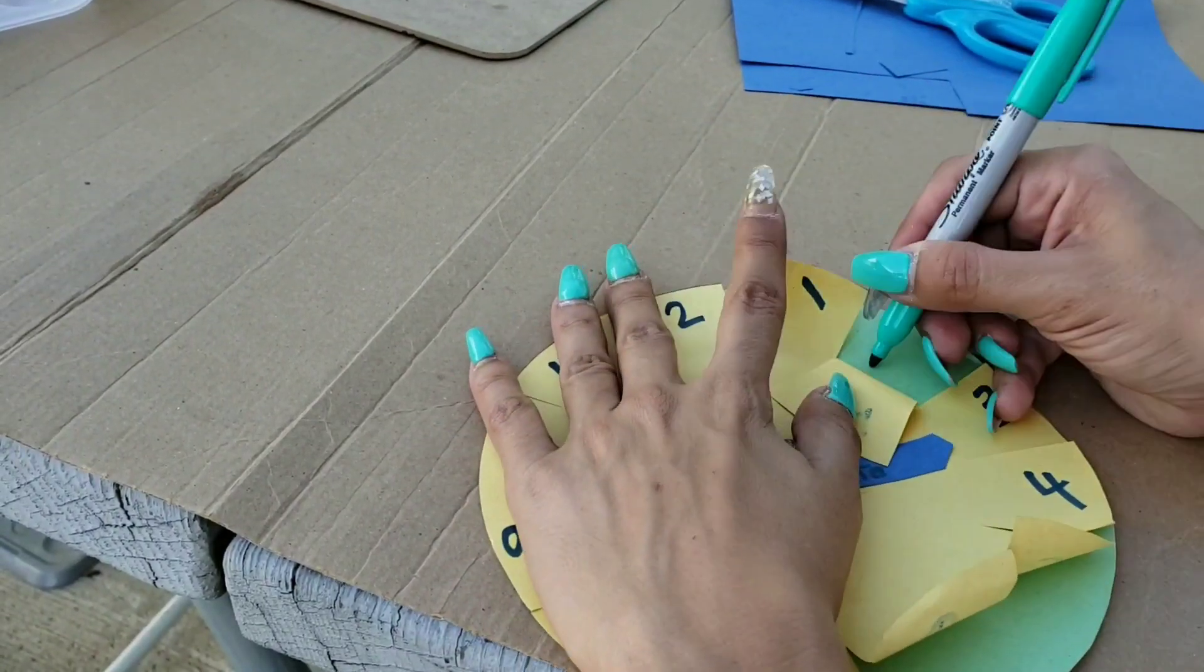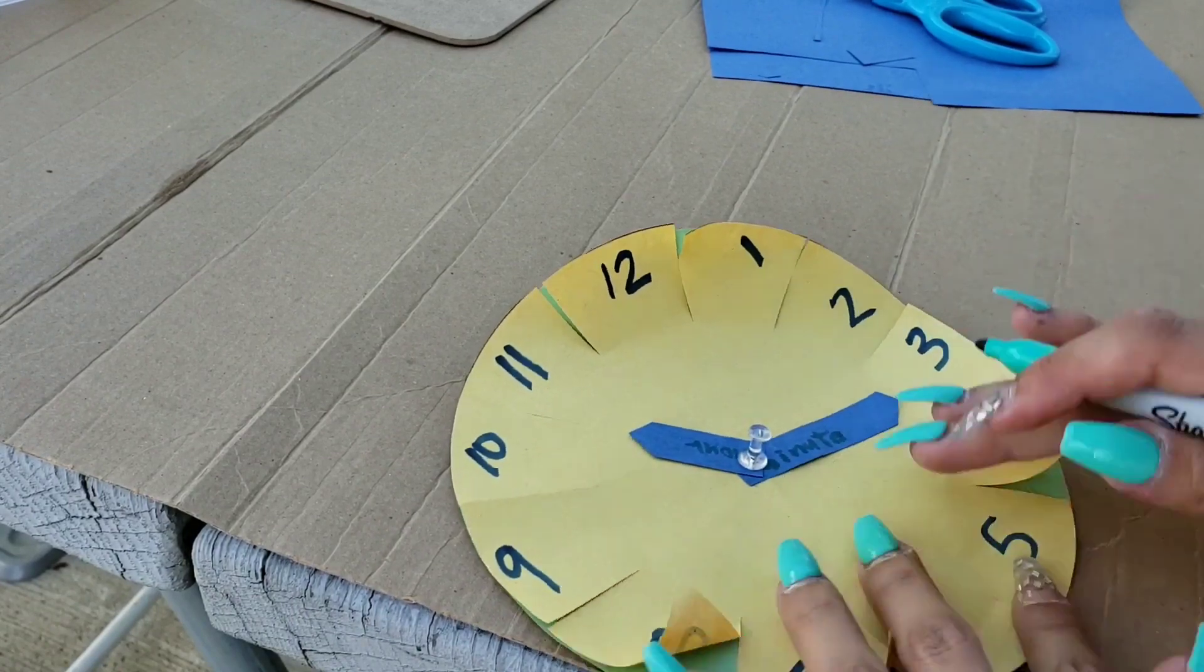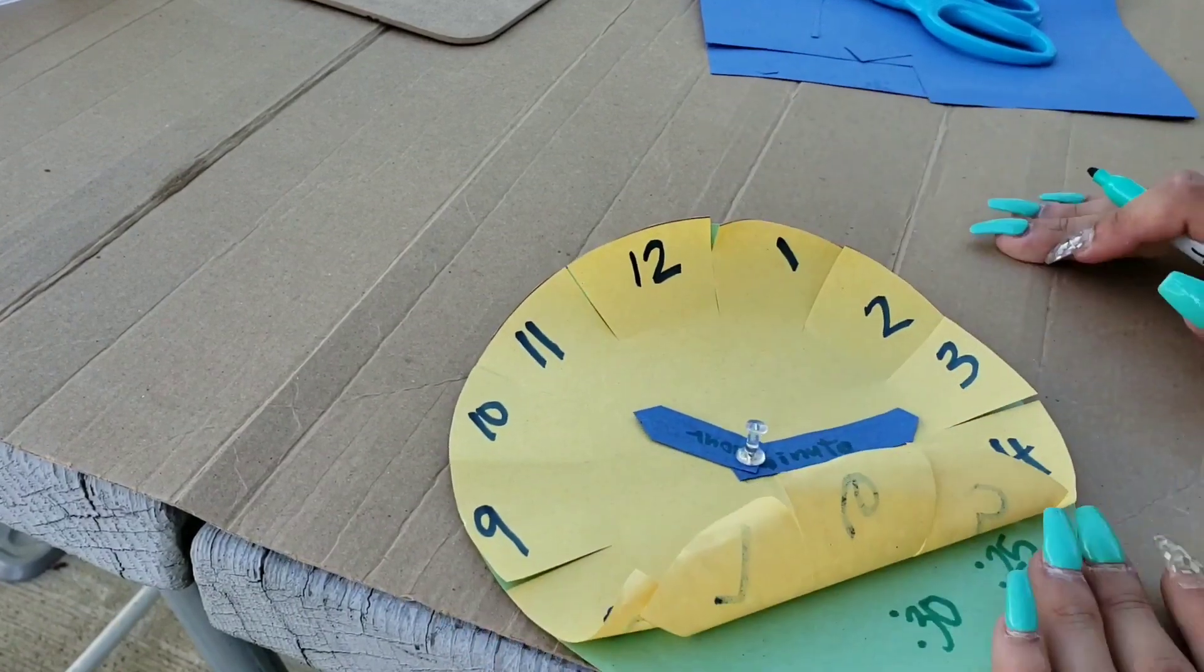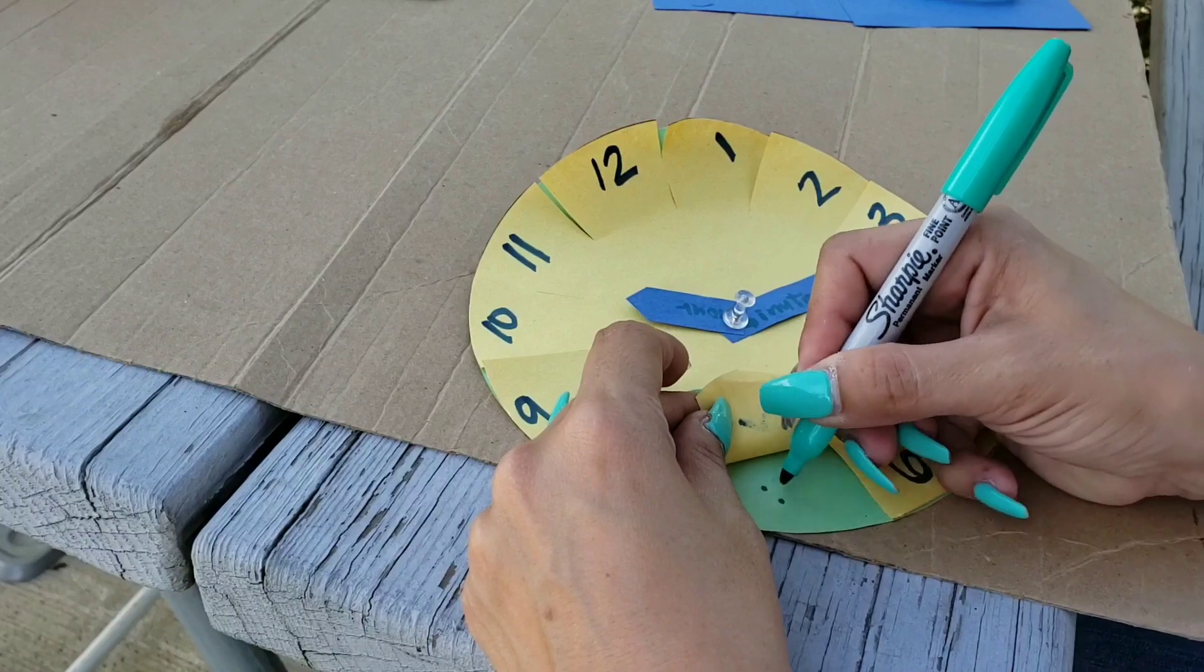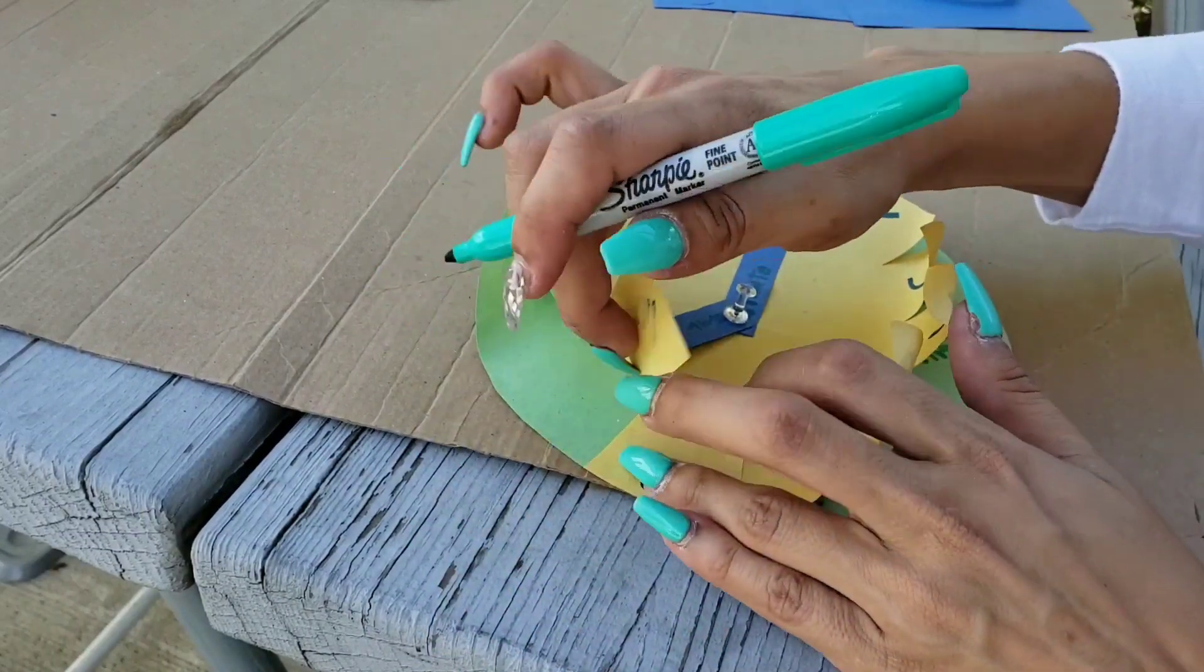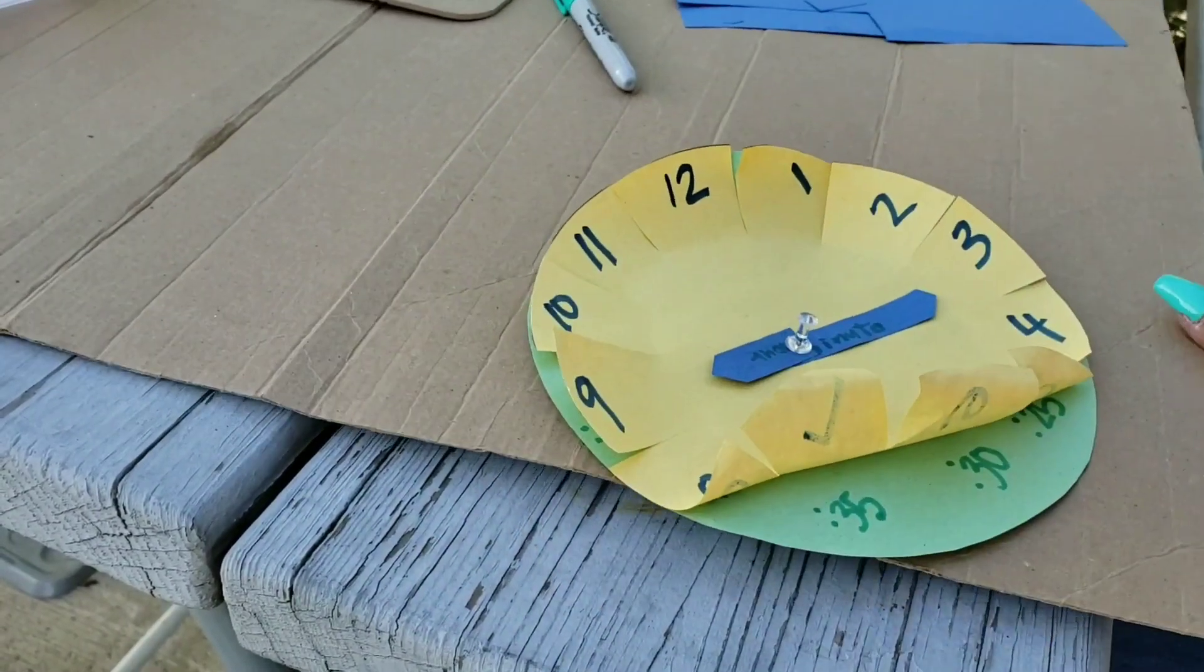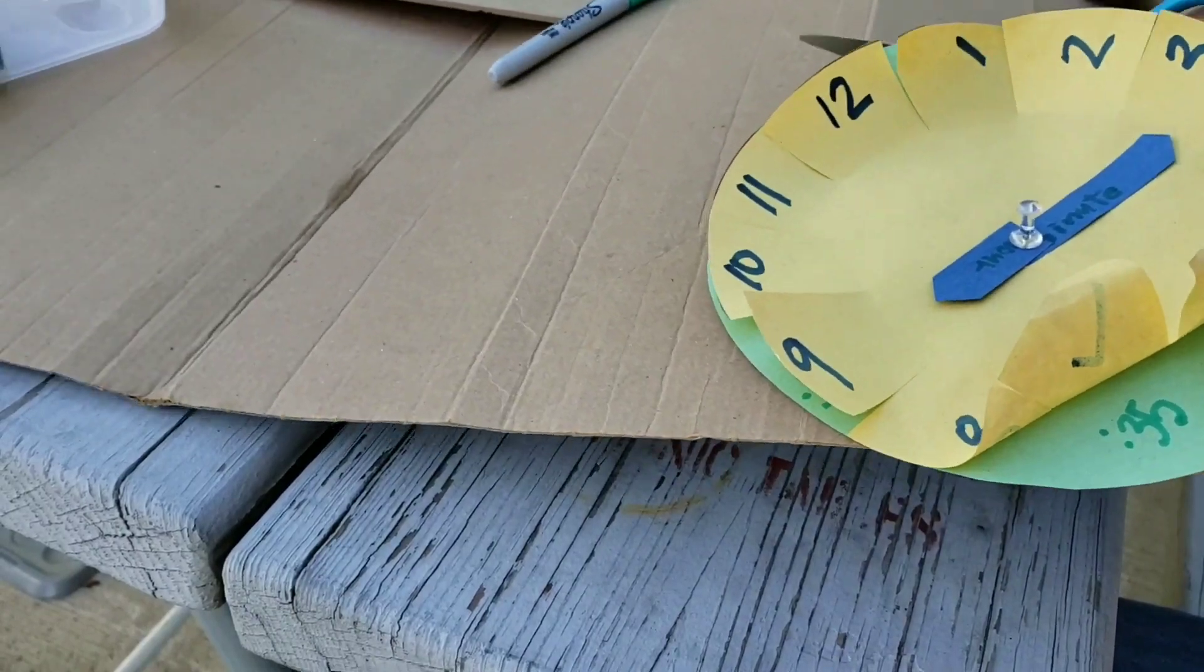Then remember to write at the back of each number the minutes that it will represent. You just have to skip count by five and fill all the spaces. Remember to start with a zero at the back of the 12 and go all the way up to 55.